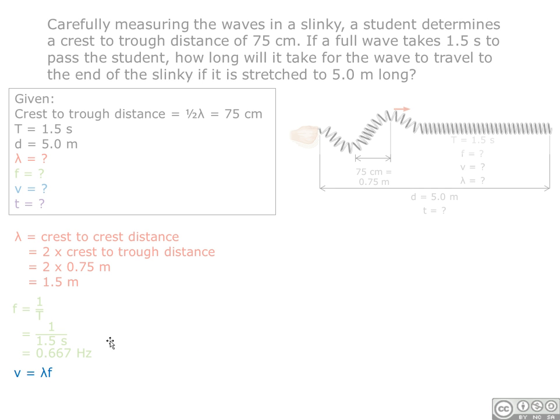Then, we find the speed of the wave by using the equation speed equals wavelength distance multiplied by frequency. We plug in our values, and we get a speed of 1.0 meters per second.